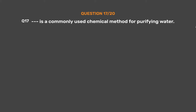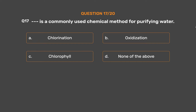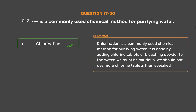Question number 17: Dash is a commonly used chemical method for purifying water. Option A: Chlorination. Option B: Oxidization. Option C: Chlorophyll. Option D: None of the above. The correct answer is Option A: Chlorination. Chlorination is a commonly used chemical method for purifying water. It is done by adding chlorine tablets or bleaching powder to the water. We must be cautious and should not use more chlorine tablets than specified.